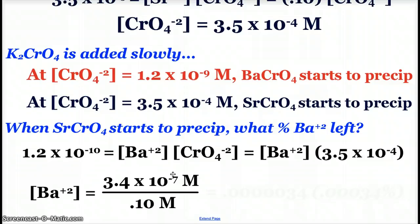When the strontium chromate starts to precipitate, how much barium is still left in the solution? And so again, I could use my barium chromate Ksp, 1.2 times 10 to the negative 10th, and I can solve by plugging in the chromate concentration, 3.5 times 10 to the negative 4th, which is the concentration when the strontium starts to precipitate. And I find that at that point, the barium concentration is 3.4 times 10 to the negative 7th molar.